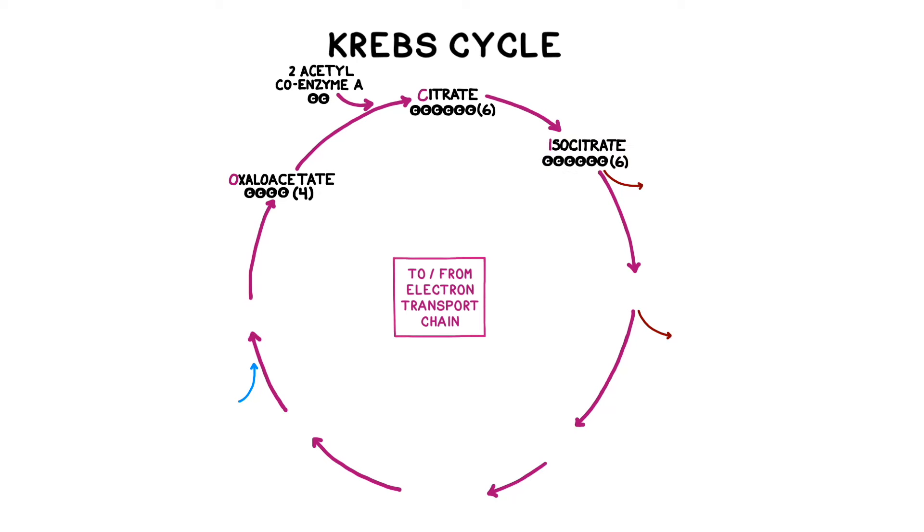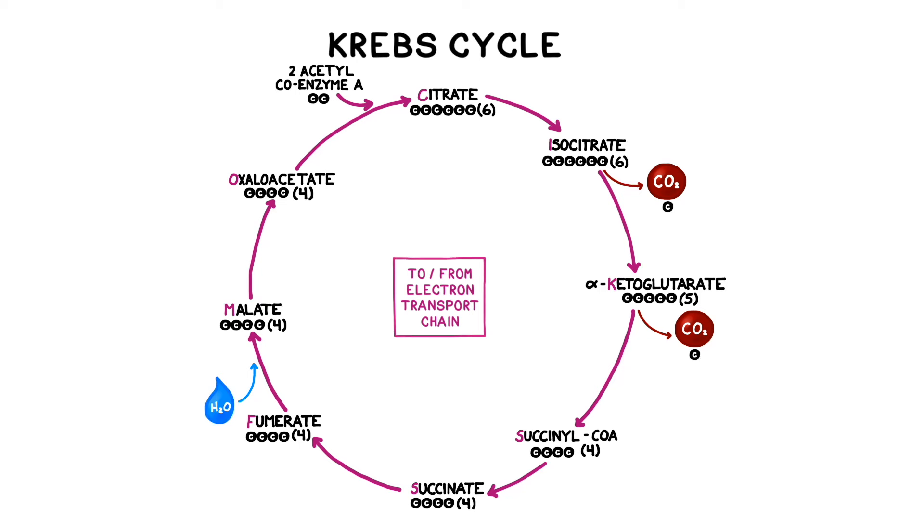From here, we add a series of enzymes to convert each molecule into the next one. The next molecule is isocitrate, which is similar to citrate and also has six carbons. Next we form alpha-ketoglutarate, which only has five carbons. So what happened to that sixth carbon? It's released in the form of carbon dioxide. Next up is a molecule called succinyl CoA, which has four carbons. Based on the last step, you can probably guess what happened to that fifth carbon. It was released in the form of a second molecule of carbon dioxide. Next up is a molecule called succinate, which also has four carbons. Then comes fumarate, which has four carbons. And then malate, which also has four carbons. We also add a molecule of water here to get this final molecule. Last, we convert the malate back into oxaloacetate, where we started, and the cycle can begin again.